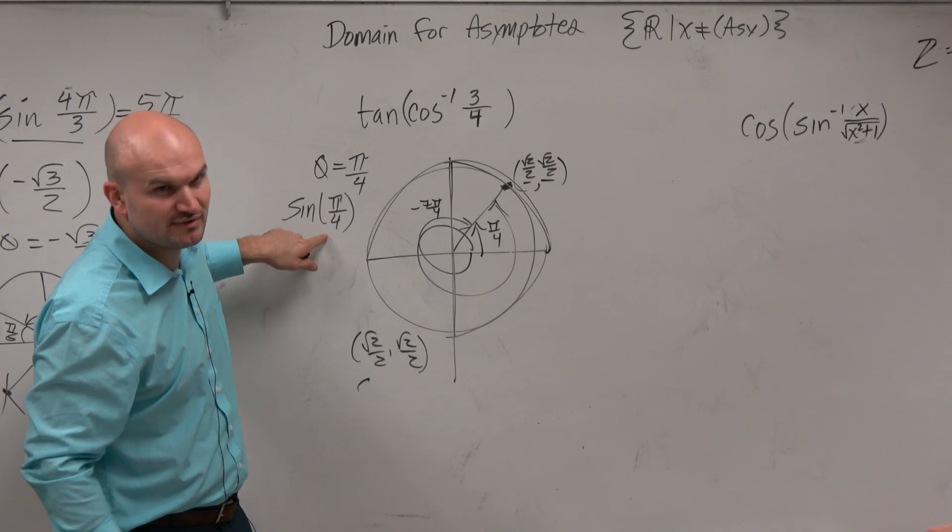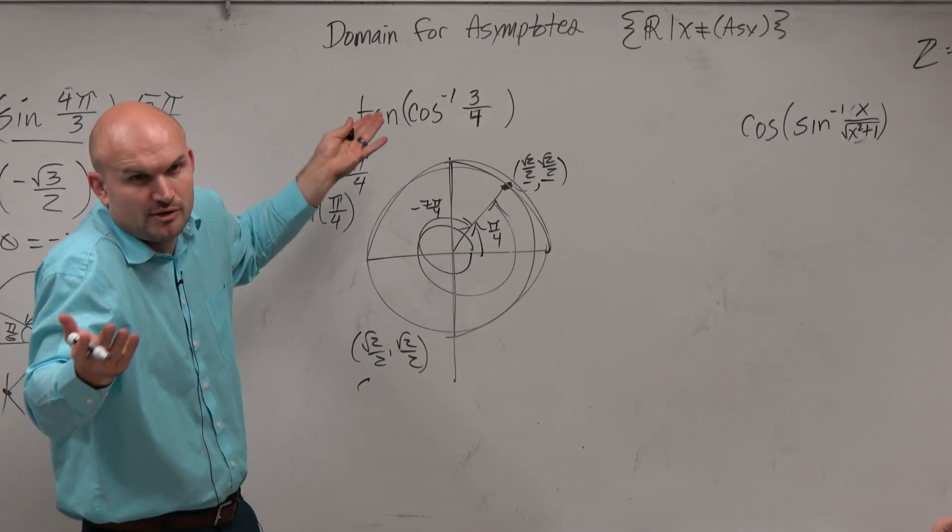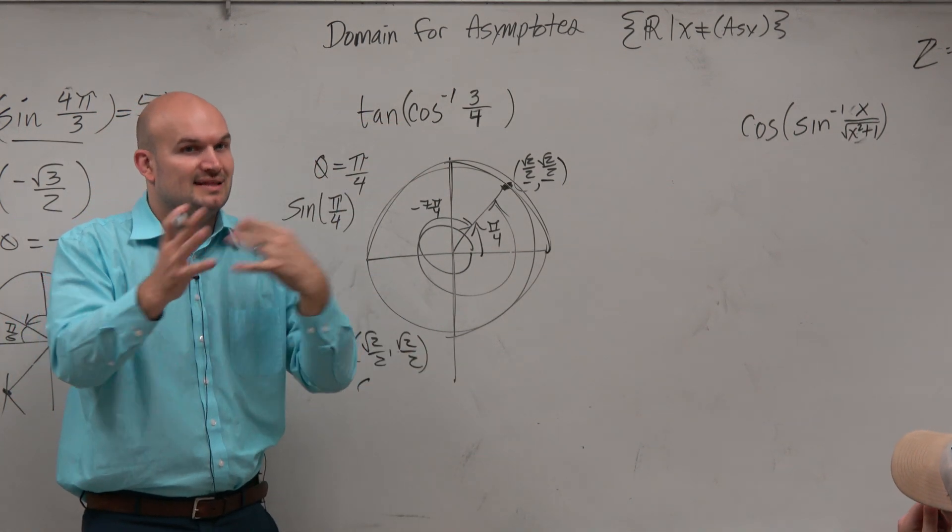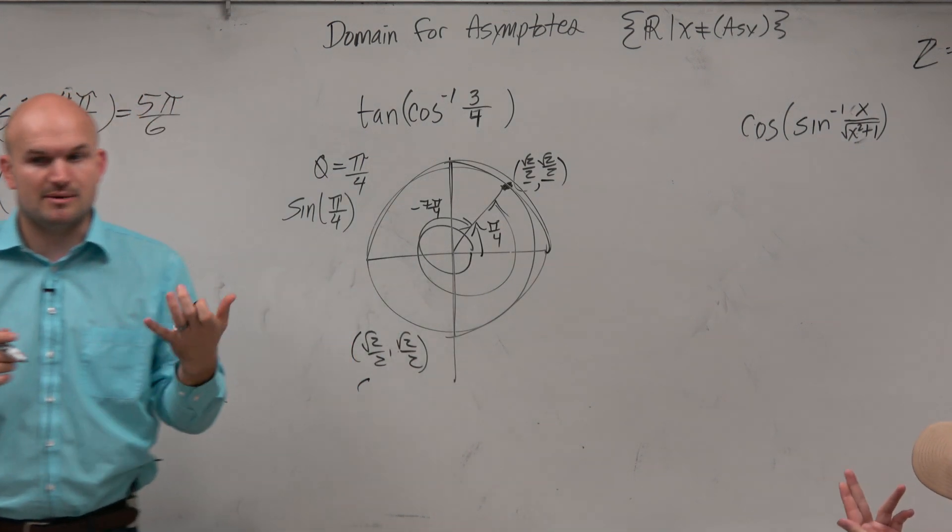So again, you don't restrict sine of pi over 4. There's only one answer. You don't need to worry about it. But when you're working backwards, that's why we had those multiple answers that had to be restricted.